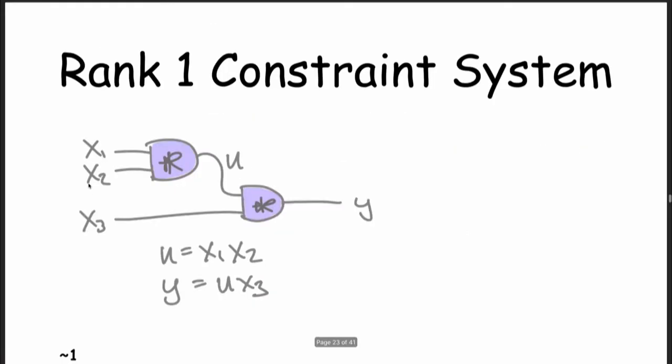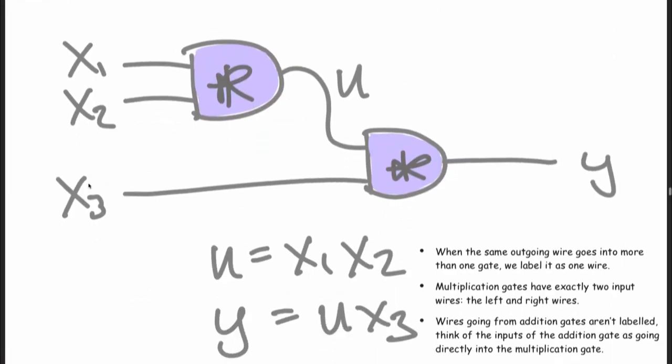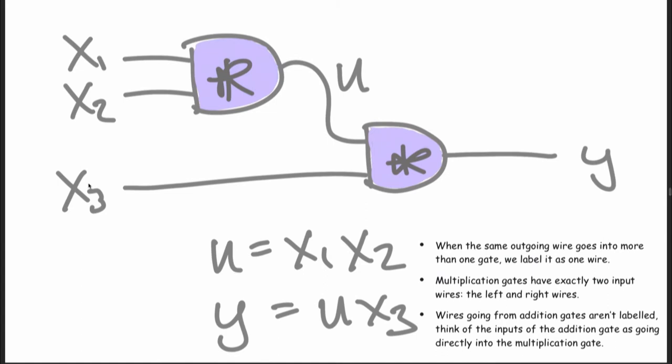If there's an addition gate, you kind of just incorporate this into one of the multiplications. So if the bottom wire was like x plus 3, you could just do u times (x plus 3) — you wouldn't need an additional gate to do an addition. You get additions for free.